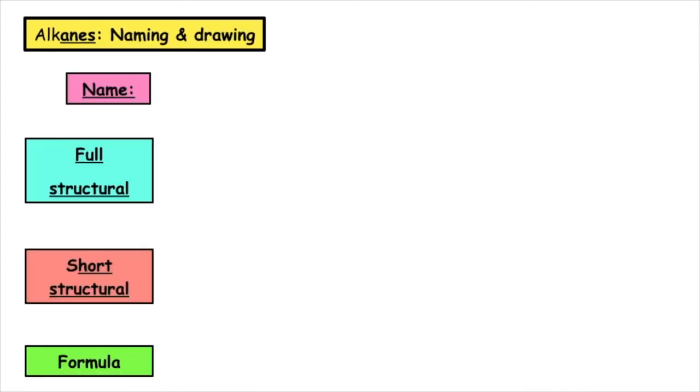So let's have a go at naming and drawing the alkanes. The first member of this homology series is known as methane. Remember, methane means that we have one carbon and it's going to have single bonds because -ane tells us that it is saturated.